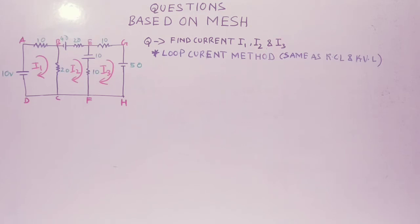Now what does this loop current method say? In this loop current method we assume the direction of current either in clockwise or anticlockwise direction, and then we find the value of I1, I2, and I3. With these values we know the total current flowing in the circuit, the whole circuit AGHD.